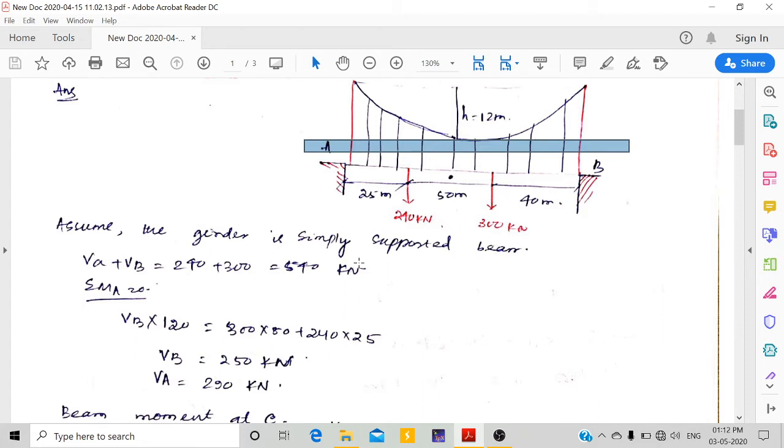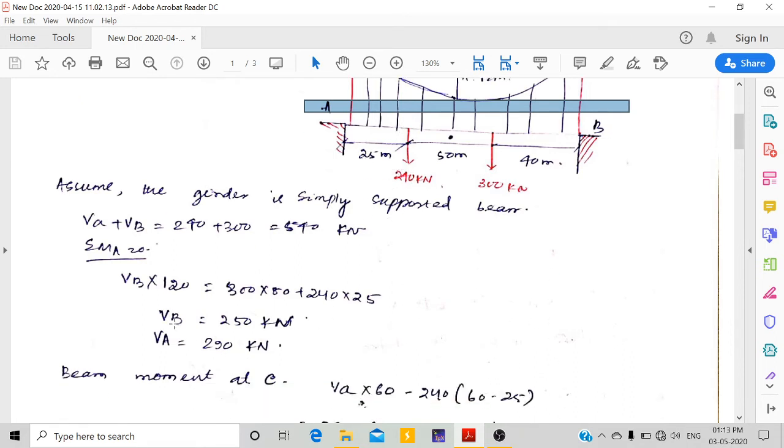To calculate the reaction at A or B, I have to take moment about either A or B. I am taking moment about A. So VB times this distance of 120 equals 300 times 80 plus 240 times 25. As a result, I calculated the reactions VA and VB.